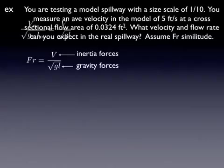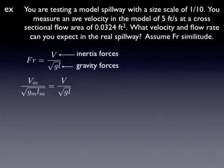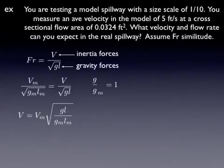To get this to work, we just need Froude similitude. So the Froude number in the model has to be equal to the Froude number in the real system. I'm looking for velocity in the real system, so I'm going to solve for that. Gravity is going to be the same in the model as in the real system, so that drops out.